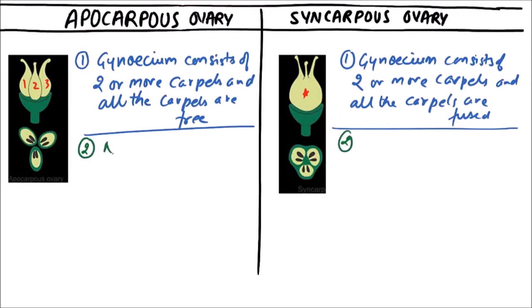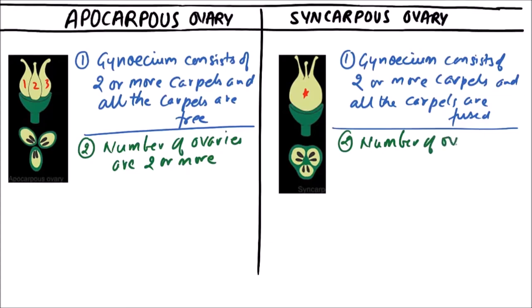In apocarpus ovary, the number of ovaries is two or more, depending on the number of free carpels. In syncarpus ovary, the number of ovaries is one.